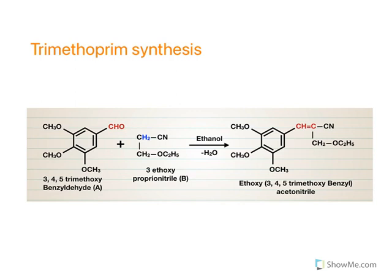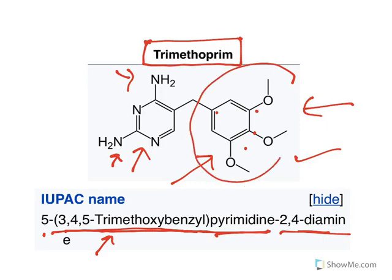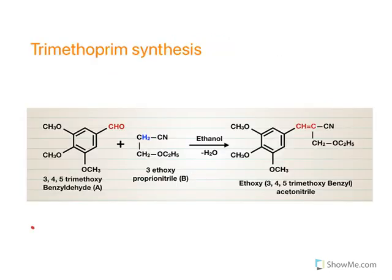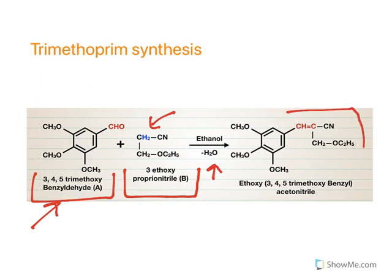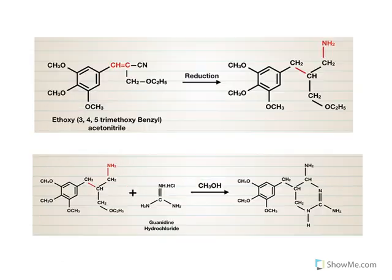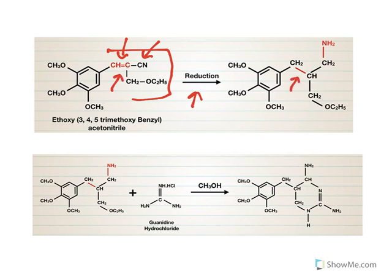The synthesis of trimethoprim is slightly more complicated. It starts with 3,4,5-trimethoxybenzaldehyde, which combines with 3-ethoxypropionitrile in the presence of ethanol. The group attaches and forms an intermediate with an adjacent nitrile (cyano) group and a double bond. Reduction converts the double bond to a single bond and converts the nitrile to an amine. The resulting compound is then condensed with guanidine to yield trimethoprim.